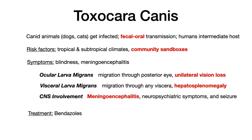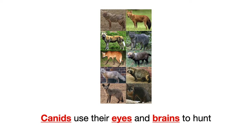If the infection becomes very severe and spreads to the brain, you get CNS involvement. The big thing to watch for is meningoencephalitis, but you can also get secondary neuropsychiatric symptoms and seizures. Treatment for Toxocara canis is bendazoles. The mnemonic is that canids use their eyes and brains to hunt — eyes for ocular larva migrans or blindness, and brains for CNS involvement or meningoencephalitis.